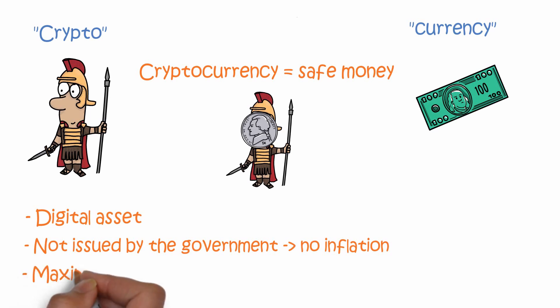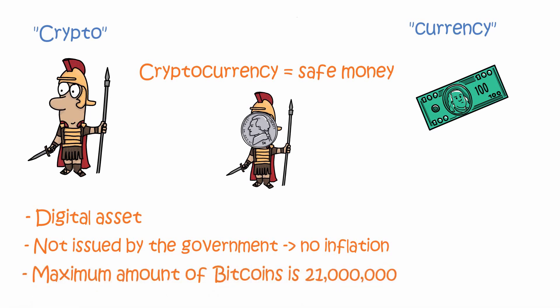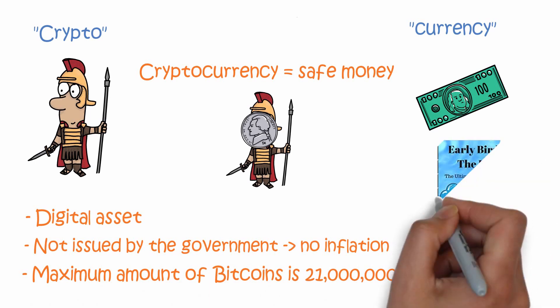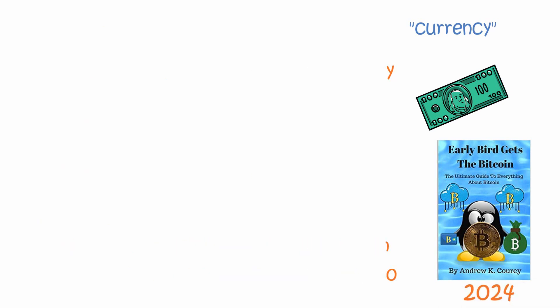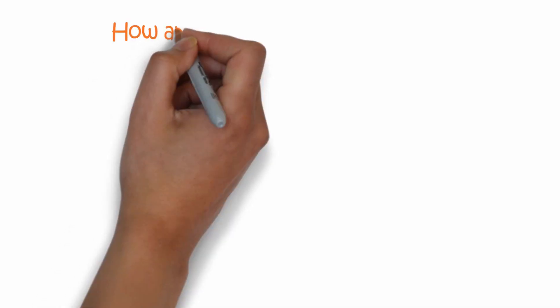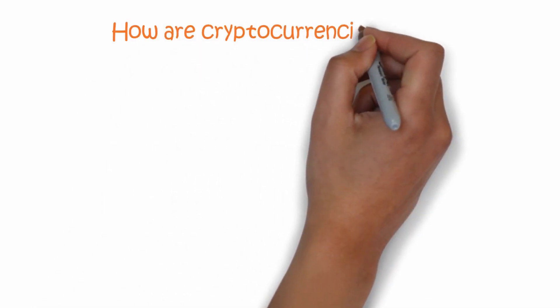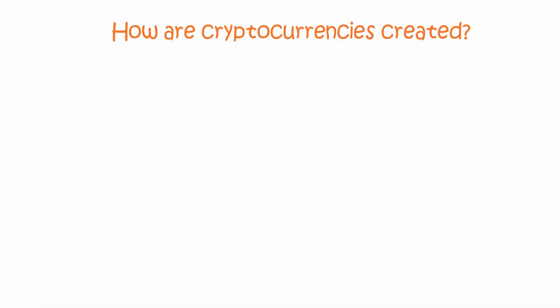The maximum amount of bitcoin that will ever be created is 21 million, and according to the book 'The Early Bird Gets the Bitcoin,' that amount is estimated to be mined by 2024. So bitcoin can't be just printed more and more until it's worth nothing. But how are cryptocurrencies created?